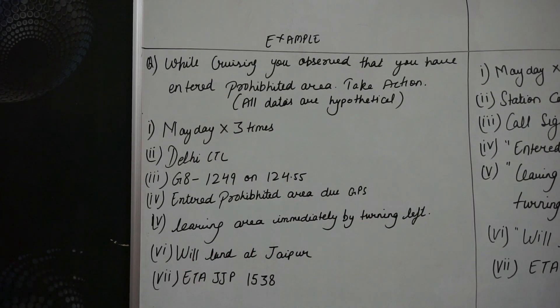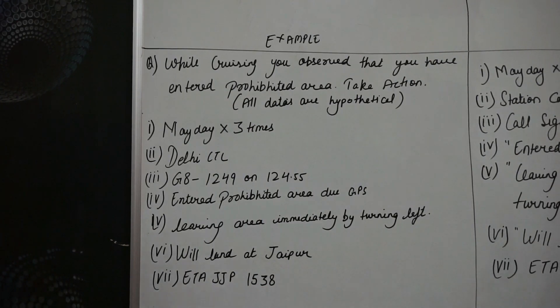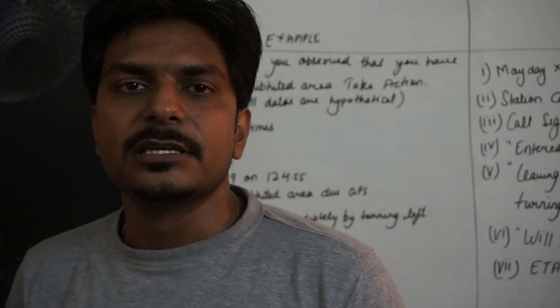The actual transmission goes like this: Mayday, Mayday, Mayday — Delhi Control — Go Air 1249 on 124 decimal 55 — entered Prohibited Area due to GPS — leaving area immediately by turning left — will land at Jaipur — ETA Juliet Juliet Papa 1538. This is your full transmission for entering a Prohibited Area.